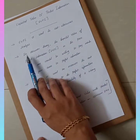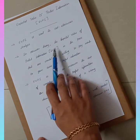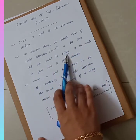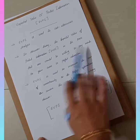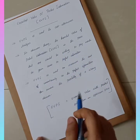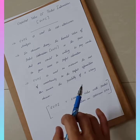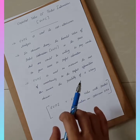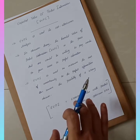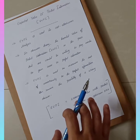In decision theory, the Expected Value of Perfect Information (EVPI) is the price that one would be willing to pay in order to gain access to perfect information — that is, to get the correct information. It is basically used for cost-effectiveness analysis.